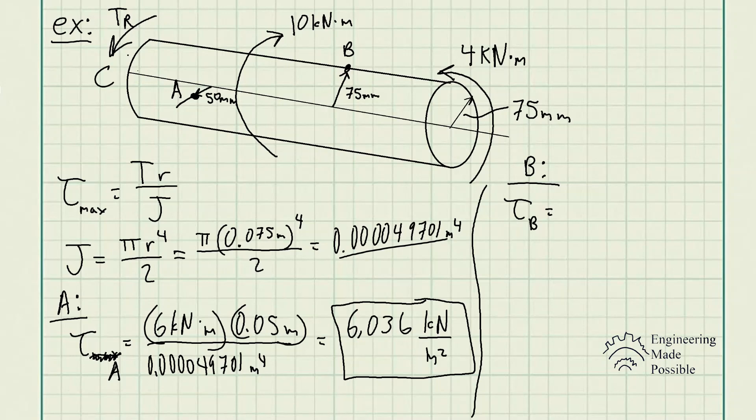And then for point A, right, we essentially just analyze the shaft from the fixed end all the way to this point. So we would only have that reaction torque, and it would be the summation of the torques, which gives a 6 kilonewton meter. That's another way of looking at it. Now, for point B, you could do the exact same thing.